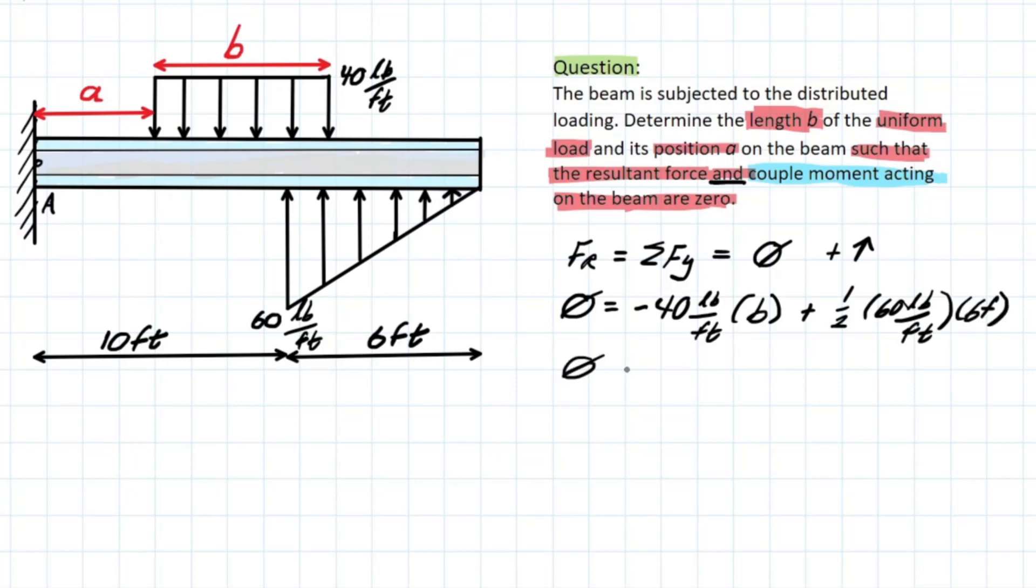So what do we have now? We have negative 40B plus 180. And we could solve for B, bringing this over to the other side. Isolating B by dividing 180 by 40. And we are left with a number 4.5 feet.